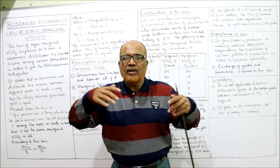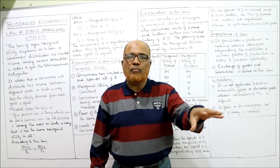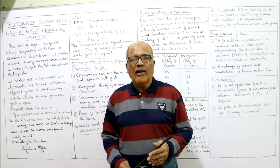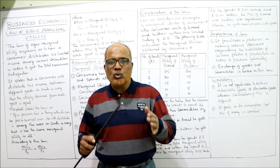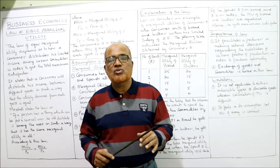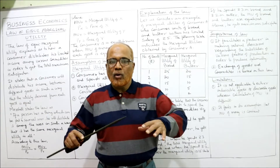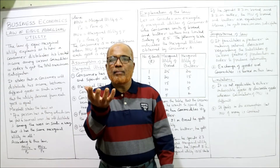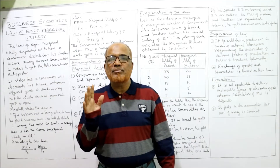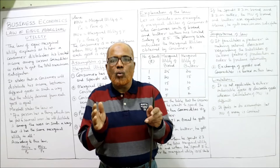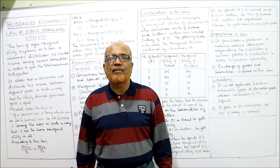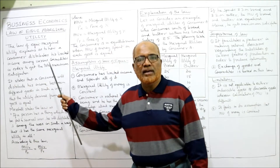There are many commodities and we cannot spend all our money on one commodity — we have to spread and distribute. For example, a person needs food items like vegetables, meat, education, rent, and school fees for children. All these are expenditures on the head of the family. The head of the family has limited income and he has to spend it in such a way as to get maximum satisfaction. This law explains exactly that.